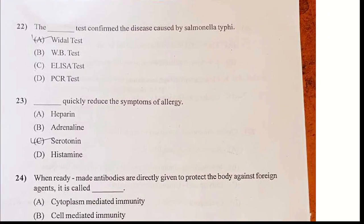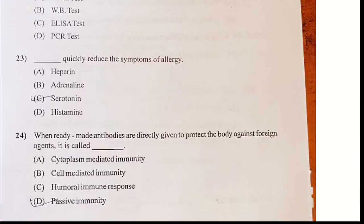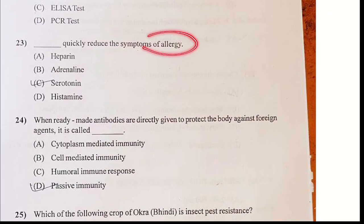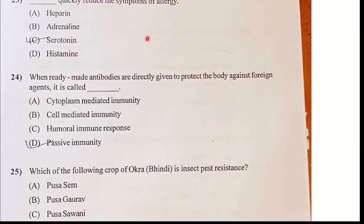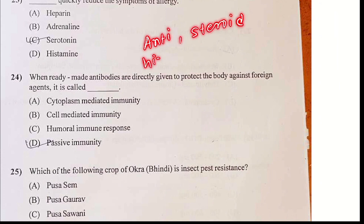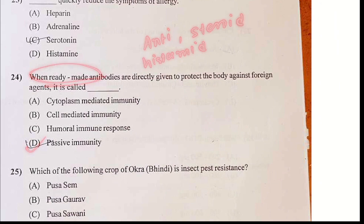Identification of Salmonella — Widal test. For treatment to reduce the symptoms of allergy, your answer is adrenaline, antihistamine and anti-steroid. Ready-made antibody is called passive immunity.